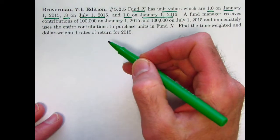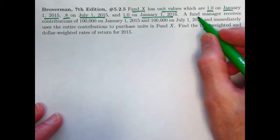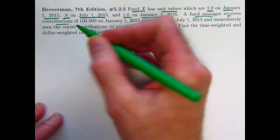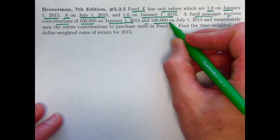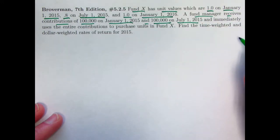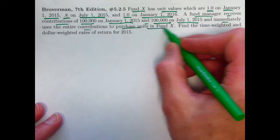0.8 halfway through the year on July 1st, and then 1.0 on January 1st, 2016, one year after the start. So it goes down in value over the first half of the year and then back up in value to the starting value per unit or per share by the end of the year. A fund manager receives contributions from an investor of $100,000 at the beginning and also $100,000 halfway through the year and immediately takes those contributions and purchases units in Fund X.